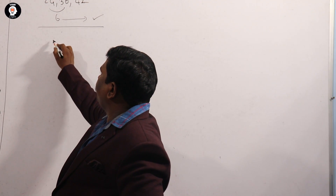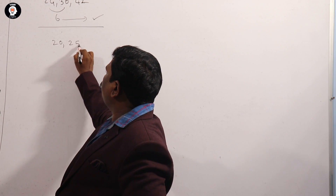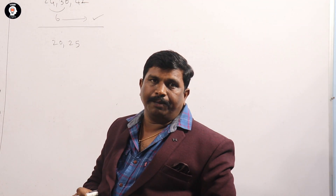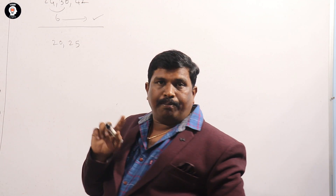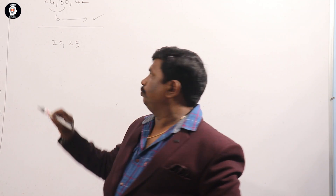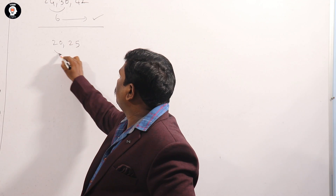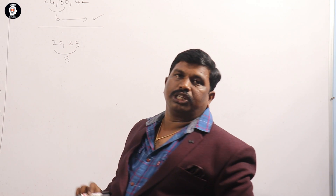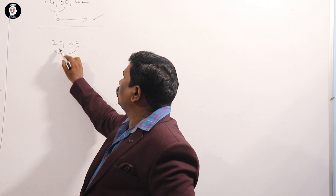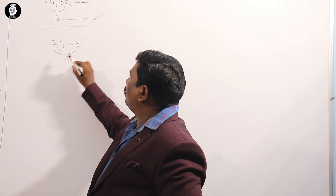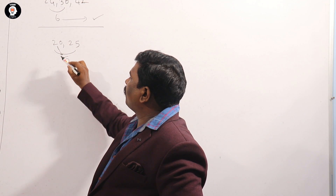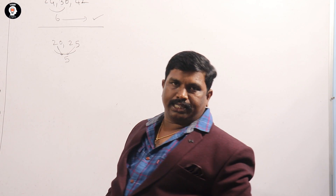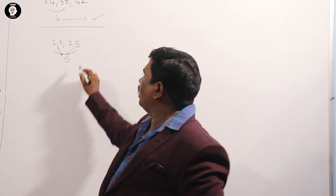One more example. Numbers: 20, 25. GCD is a factor. Minimum difference is 5. The number is 25, and 5 is a factor of 25. Yes, 25 is a factor. Yes. That is the GCD.